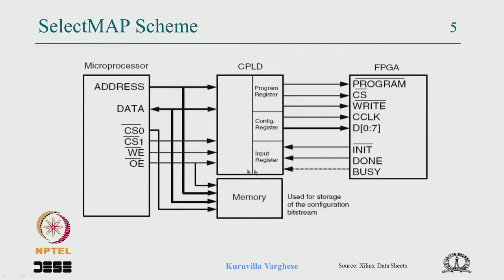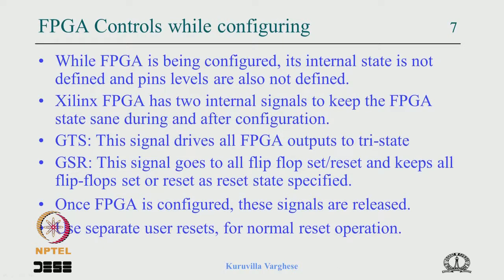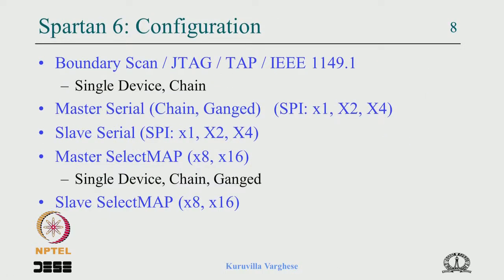A parallel port can be slow if software-controlled, so it is worthwhile to have a CPLD built in for faster operation. The configuration bitstream is stored in CPU memory. In current FPGAs, the JTAG boundary scan can be single device or chained, as in serial configuration. Master serial can be chained or ganged — identical devices can be connected in parallel in ganged mode. The serial PROM can be 1-bit, 2-bit, or 4-bit, and can be programmed through JTAG.